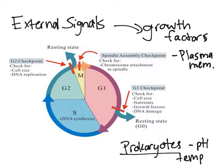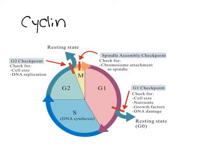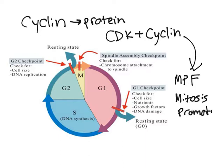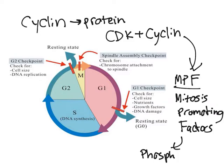Internal signals are essentially regulated by cyclin. Cyclin is a protein, and CDK — cyclin-dependent kinase — plus cyclin gives you MPF, which is mitosis-promoting factors. MPF can phosphorylate things, meaning it adds phosphates to proteins.